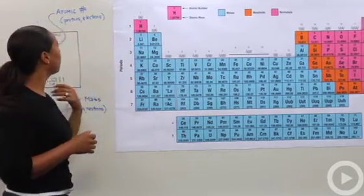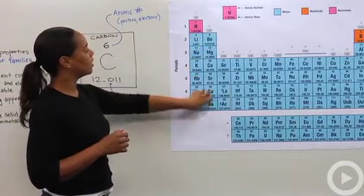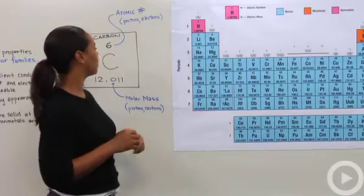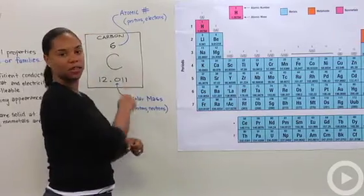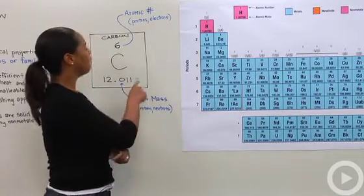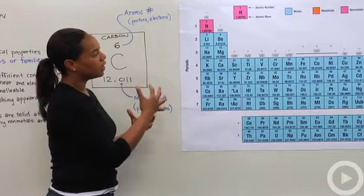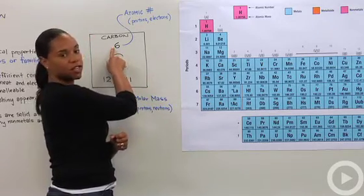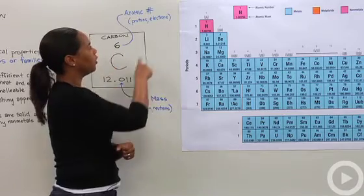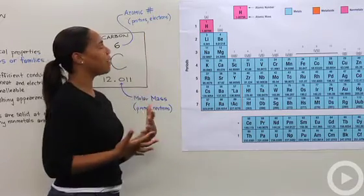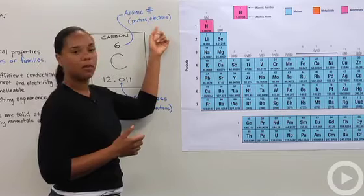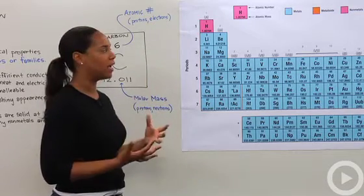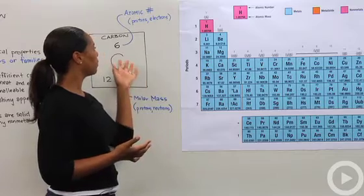So what is contained here—if you zeroed in on one of these boxes, let's pick carbon because carbon is the stuff of life, you would see a few numbers contained therein. Above carbon is the number 6, and that indicates the atomic number. The atomic number tells you how many protons and how many electrons are contained in an element.